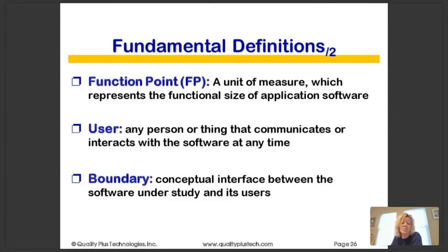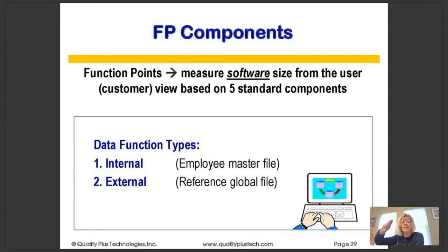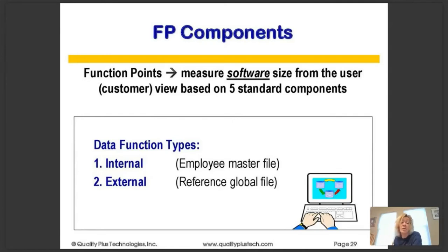We have the notion of a boundary — a conceptual interface between the software and the users. Users are always outside the boundary. Users could be another piece of software, hardware, a person, or a department. Function points measure software size from the user or customer viewpoint based on five standard components. We look at internal data — things like an employee master file — and external data, such as postal codes or zip codes maintained somewhere else like the post office. We get points for referencing that data.